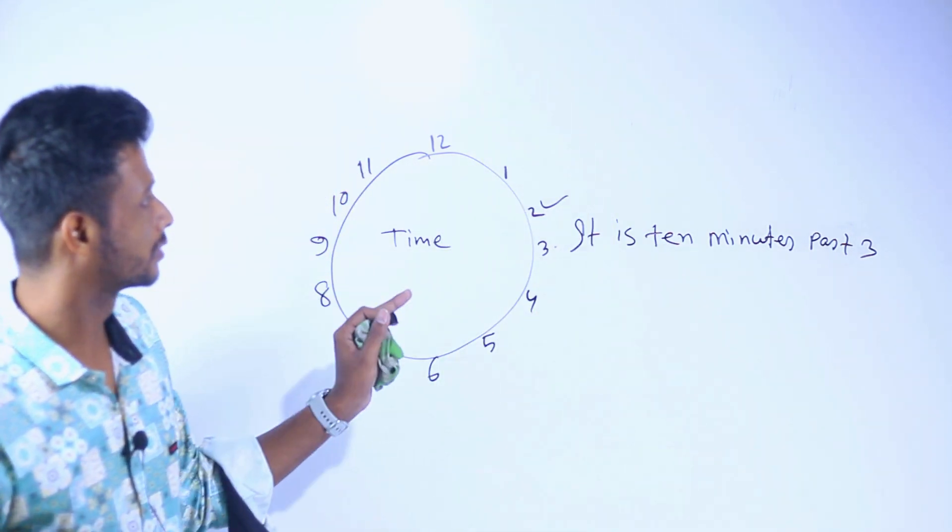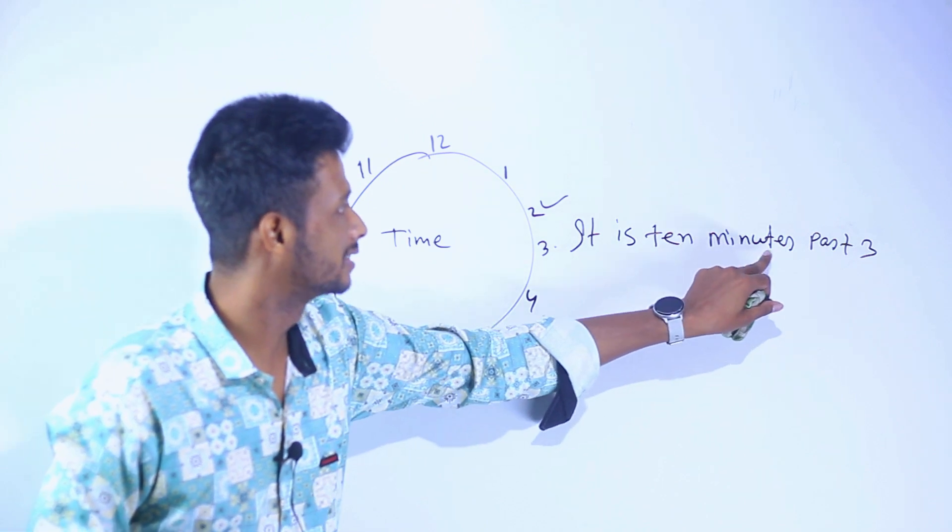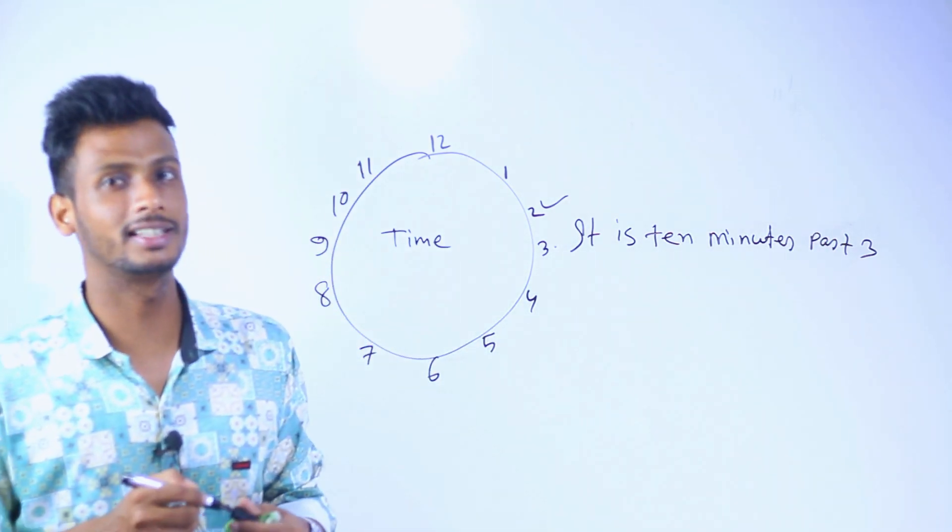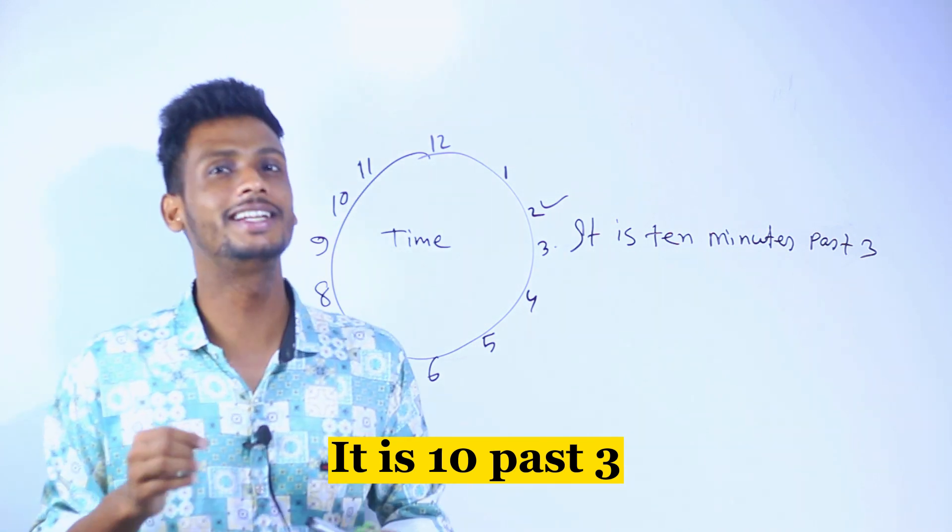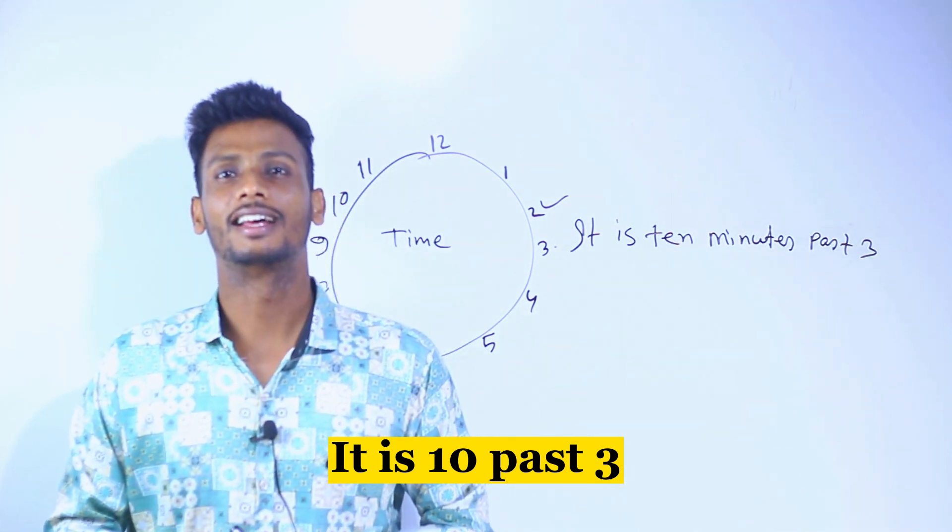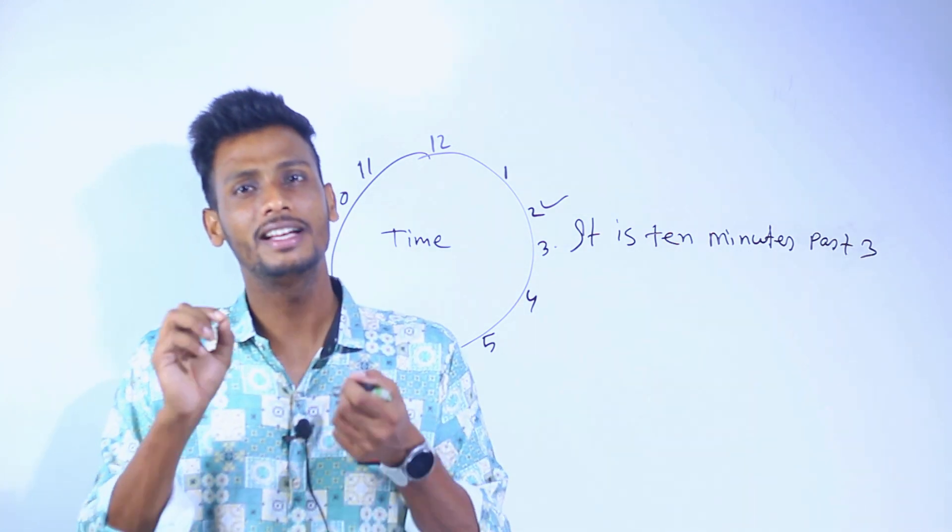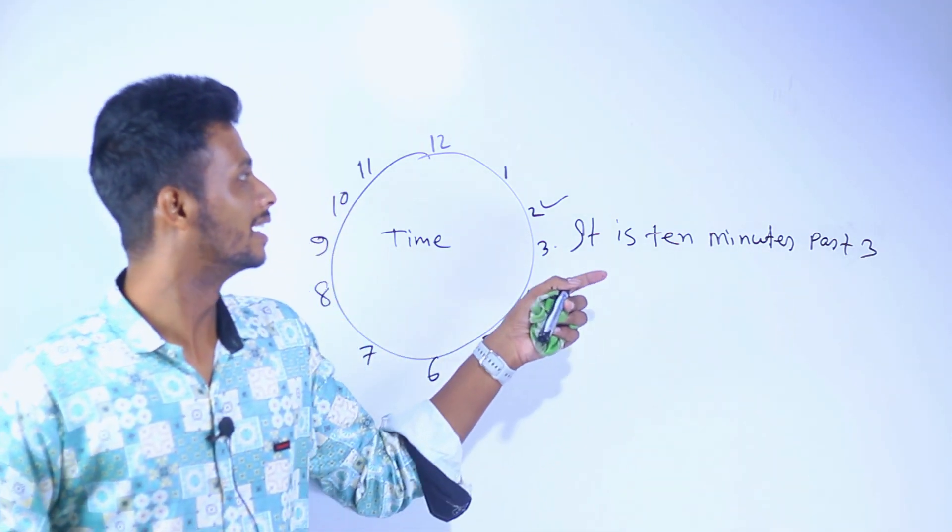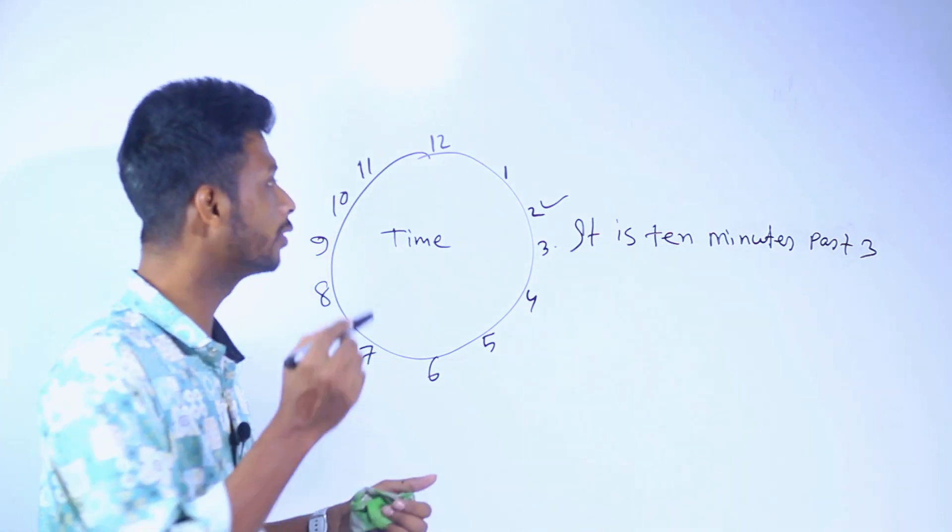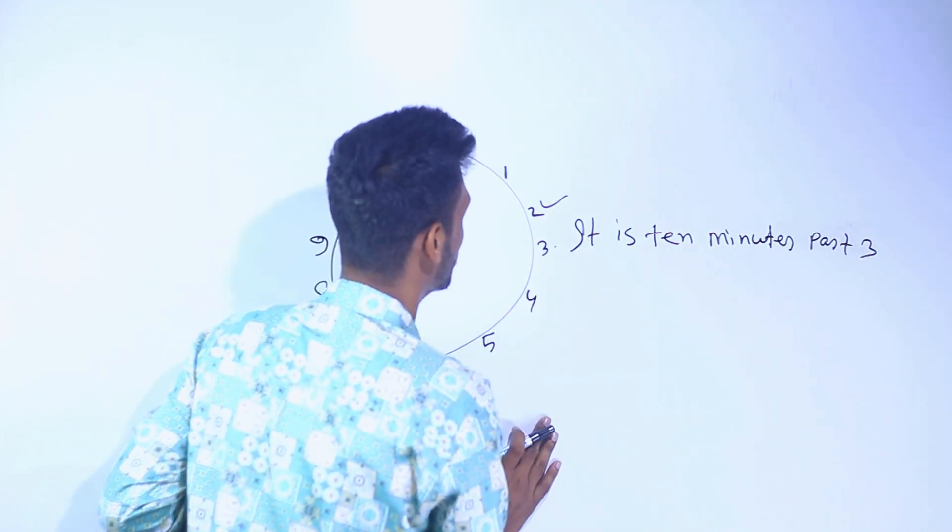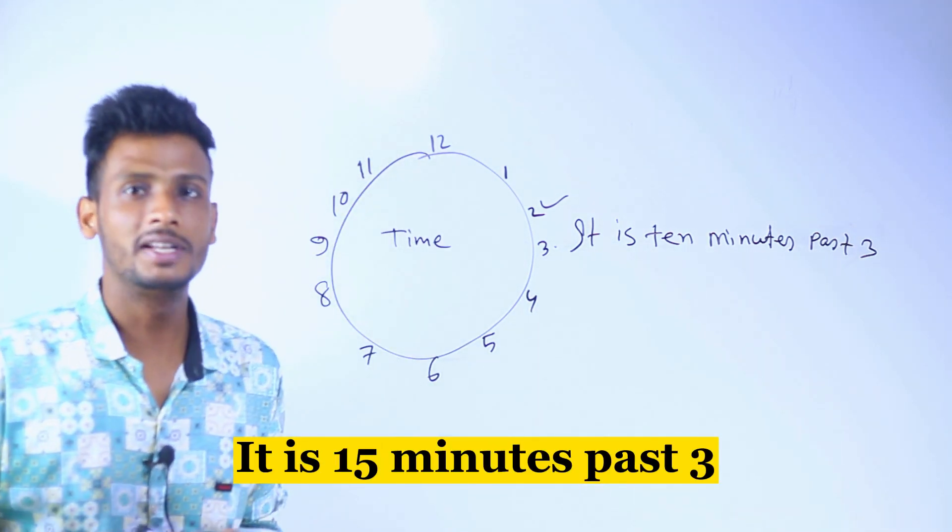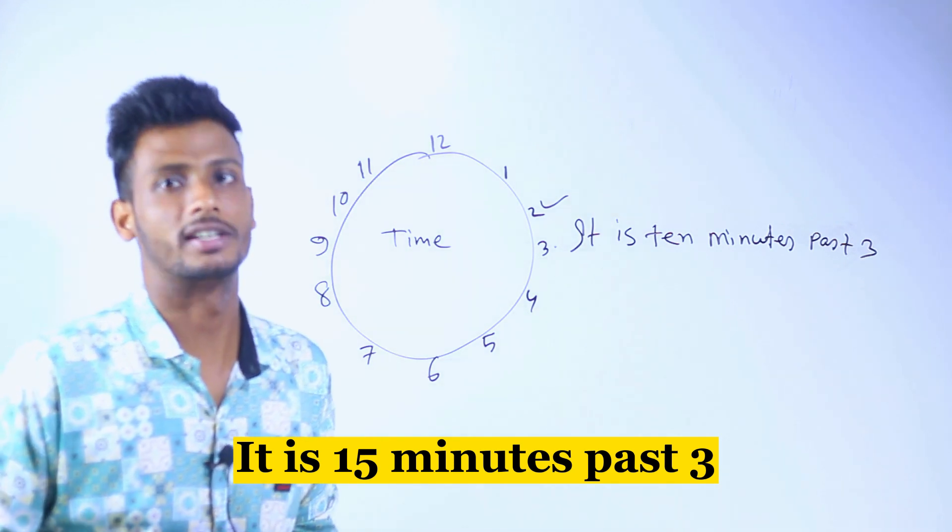So, it is 5 minutes past 3. It is 10 minutes past 3. You can easily say it is 10 past 3. So it is 15 past 3. Then I will say it is quarter.